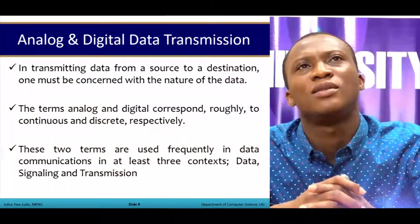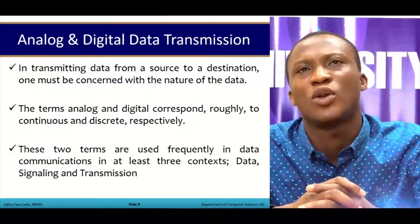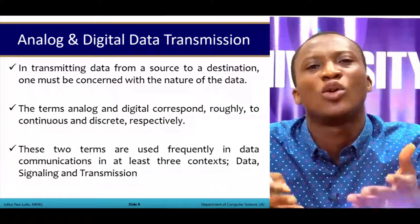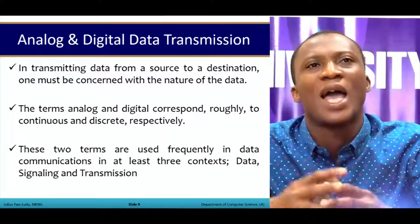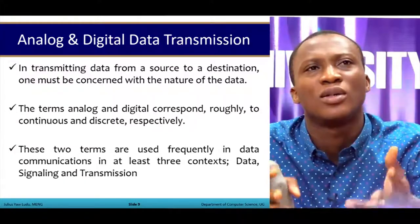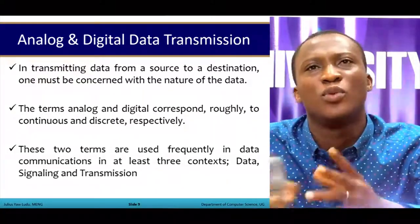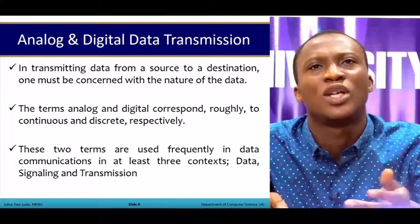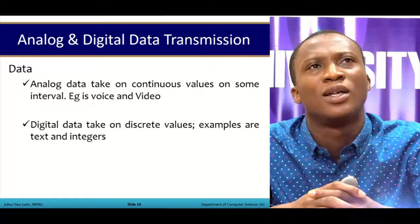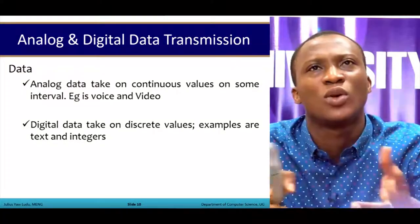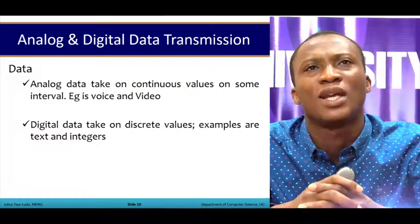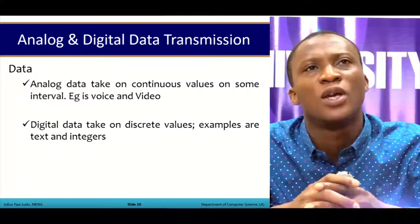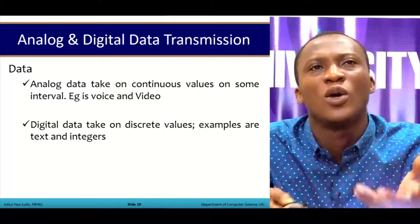Next we look at analog and digital data transmission. When transmitting data from a source to a destination, we need to consider the nature of the data: analog or digital. Analog data takes on continuous values — examples include voice and video. Digital data takes on discrete values — examples include text, integers, or numbers.